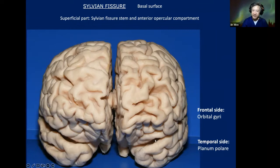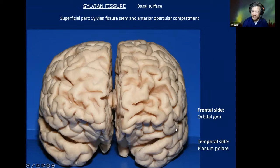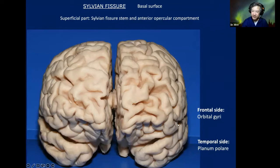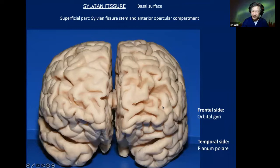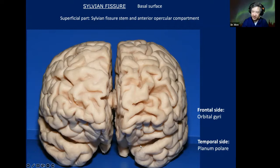What is the lateral part of the Sylvian fissure on the basal surface? It is called the Sylvian fissure stem. If we go deeper, we go to the anterior surface of the insula. The turning point from the surgical viewpoint — between the basal surface and the lateral surface — is better defined at the tip of the pars triangularis. On the superficial part of the basal surface, we have the Sylvian fissure stem and the neural structures involved, which are the orbital gyri on the frontal lobe and the planum polare.